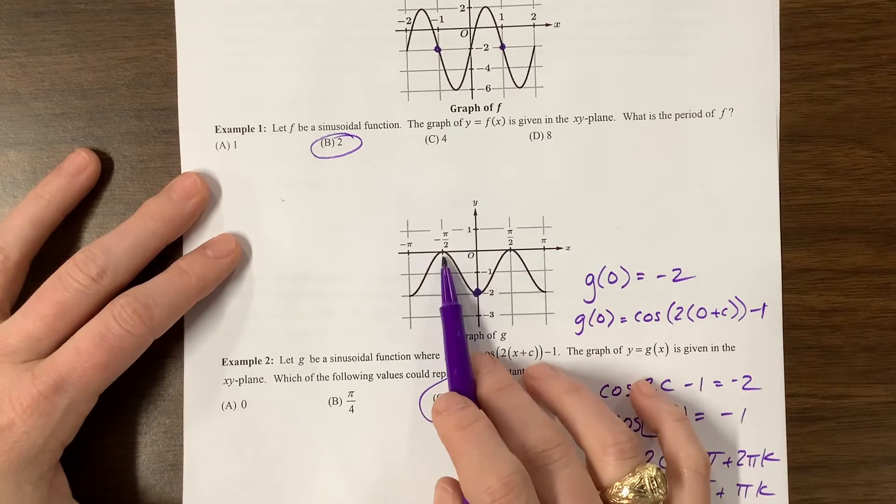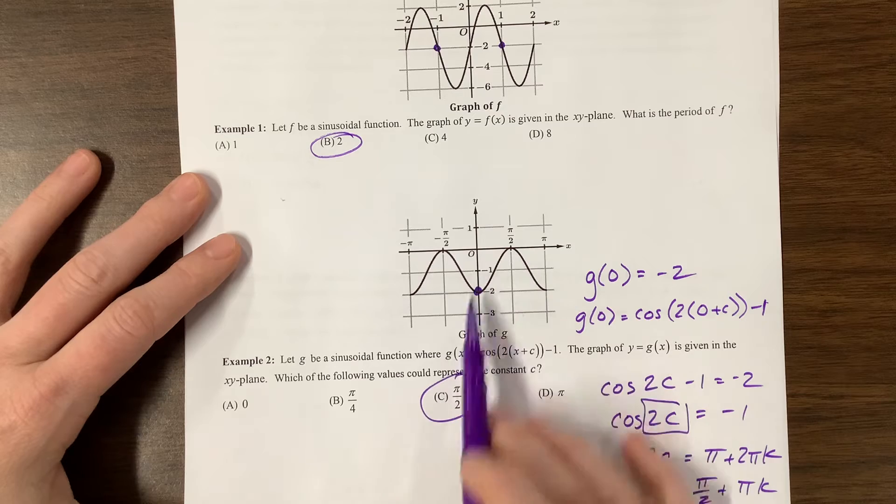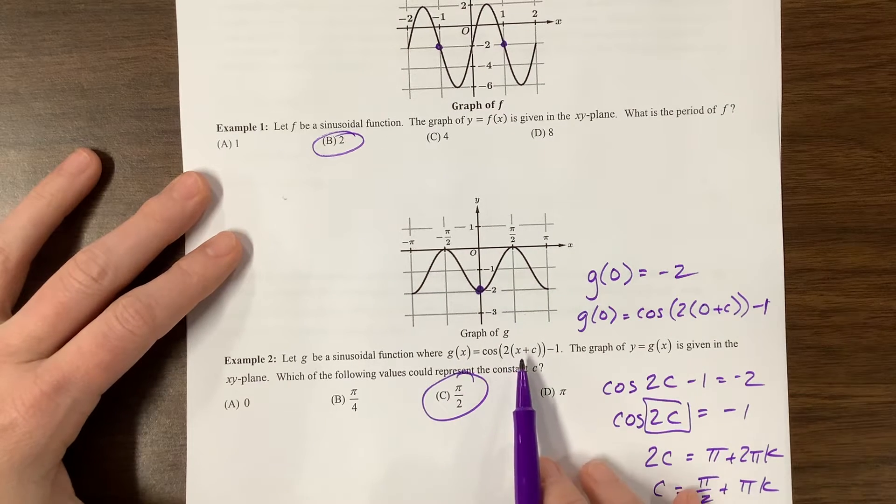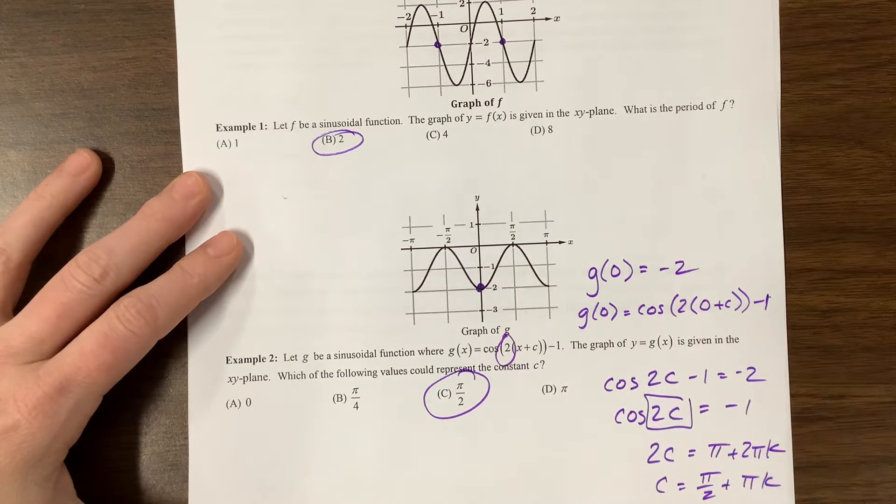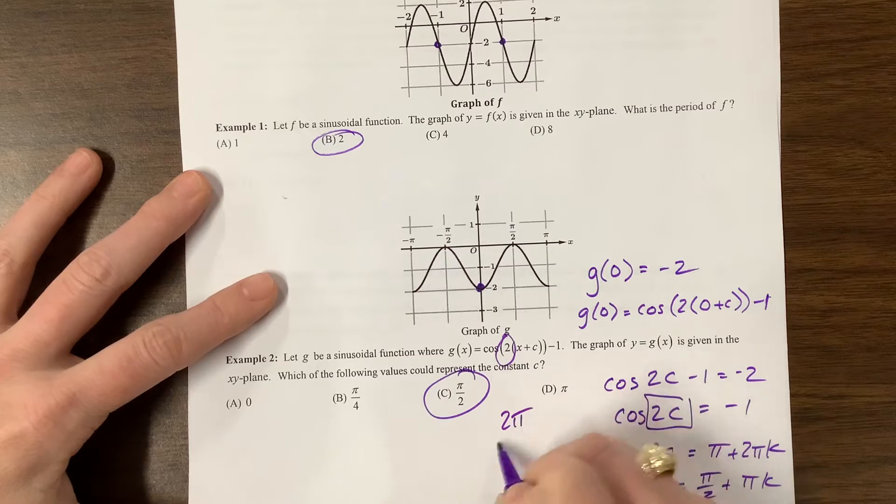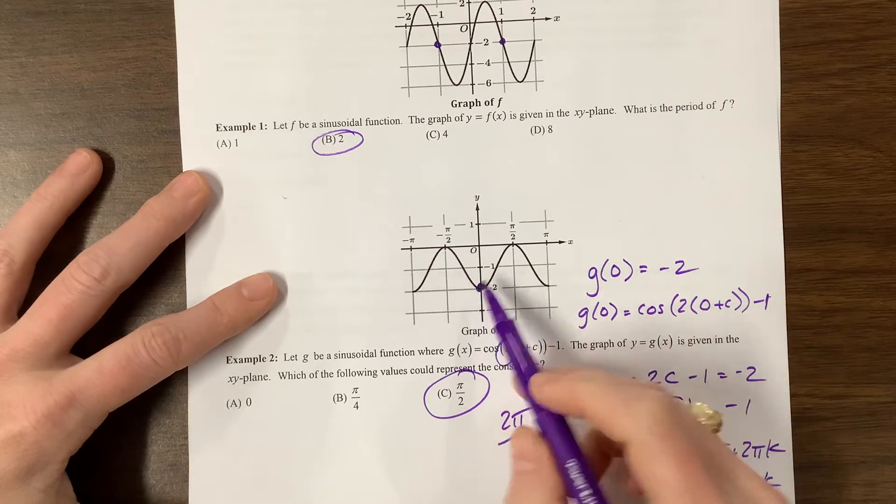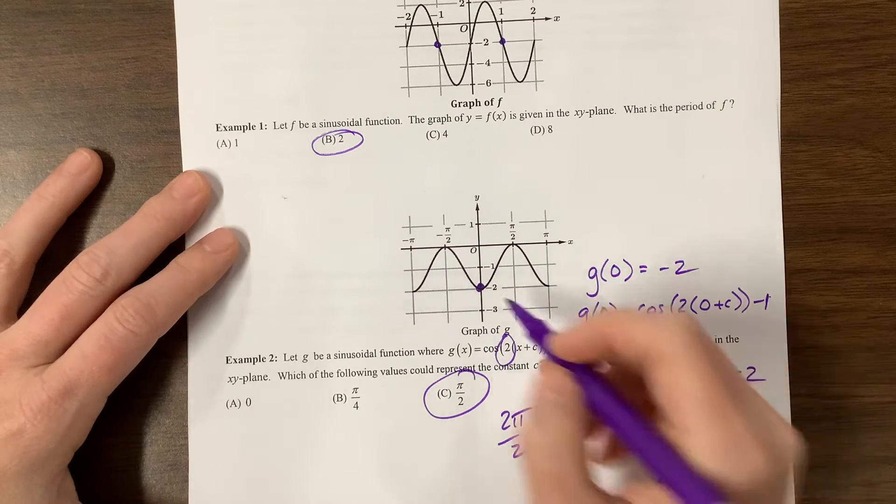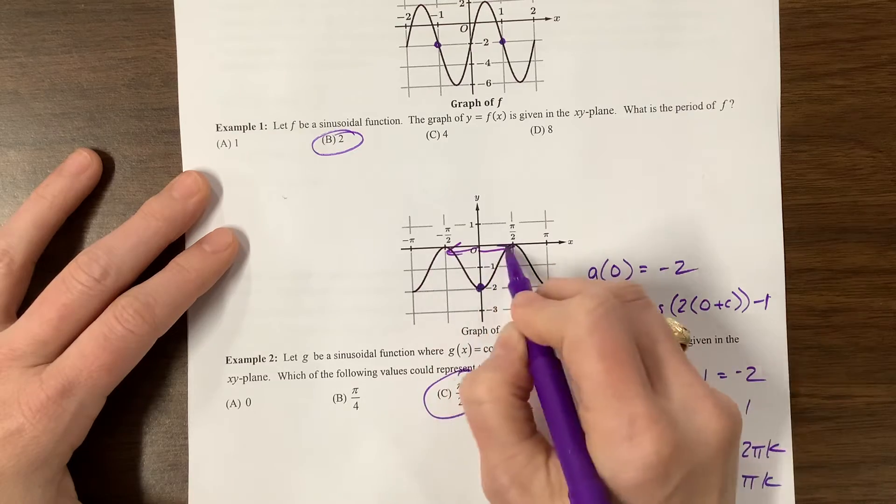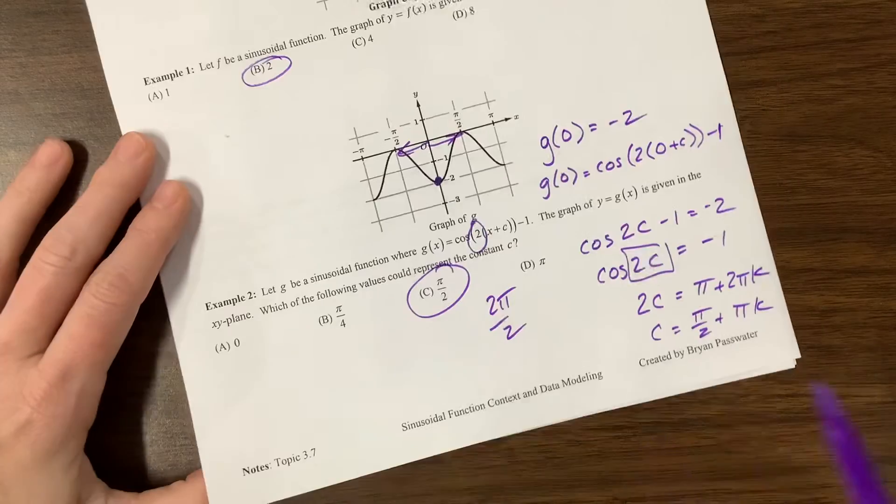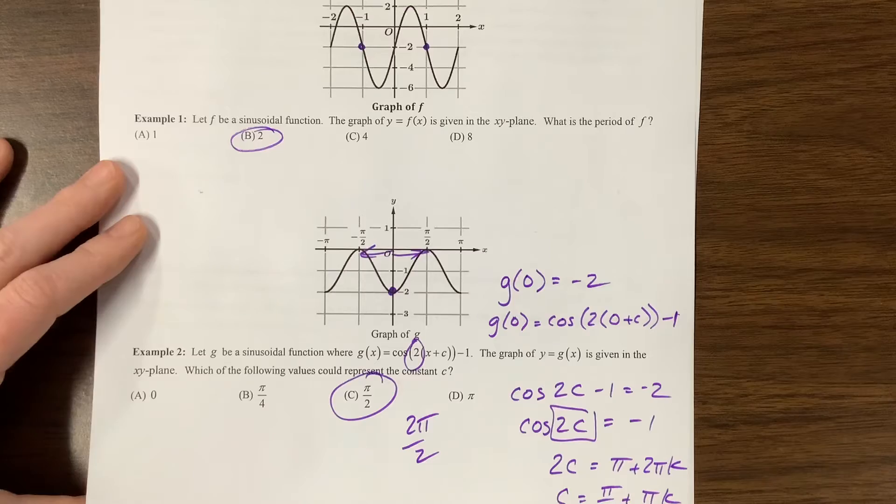So, this right here is going to be equal to 2C is equal to pi plus 2 pi K. If I divide by 2 to get C, I get pi over 2 plus pi K, anything that's pi units away. So of those, the only correct answer is C. There are other ways to think through this. My period is pi because it's 2 pi over 2.